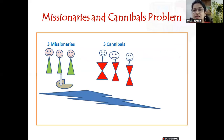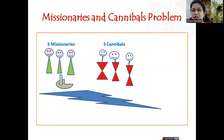Let us see the missionaries and cannibals problem. We have three missionaries and three cannibals, and a boat is given. The task is that both missionaries and cannibals have to cross the river with the help of this boat. The condition is that only two persons at a time can use the boat. The constraint is that cannibals — who are man-eaters — should never outnumber the missionaries on any bank. Always, the missionaries should be greater than or equal to the cannibals on either side of the banks.